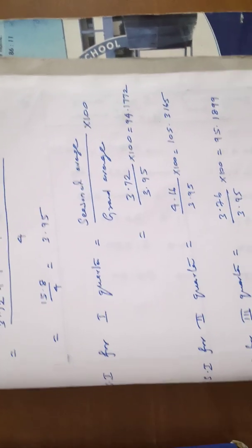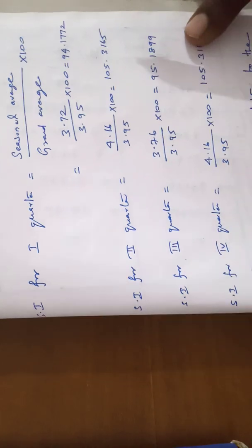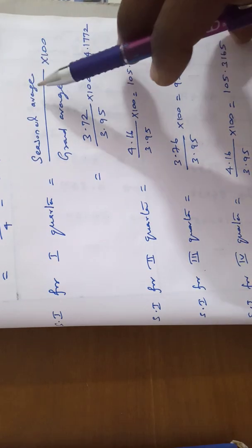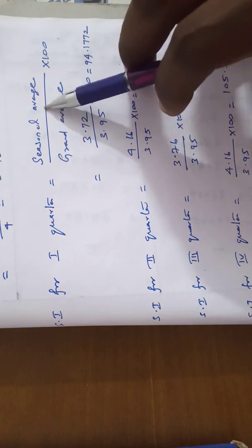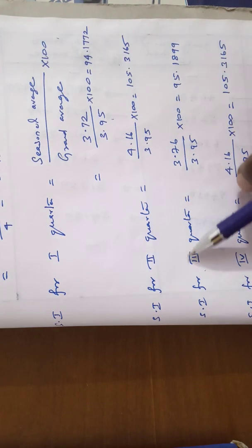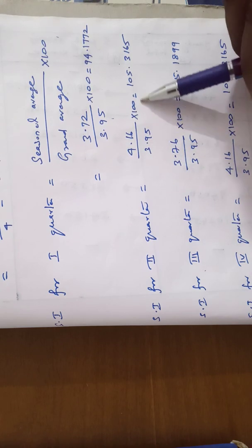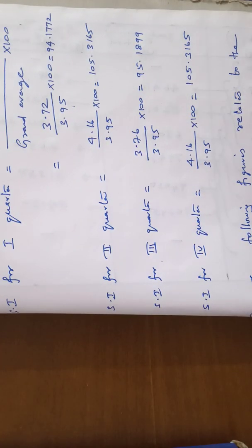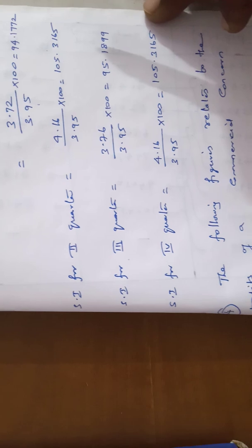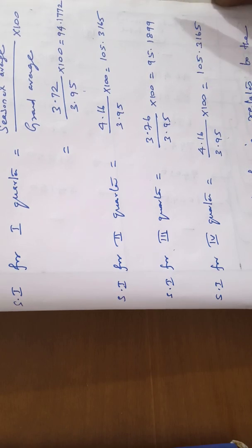We have to compute the seasonal index for each and every quarter values. First we have to compute the seasonal index for the first quarter. Seasonal average by grand average into 100. The first quarter value seasonal average is 3.72 by grand average 3.95 into 100 is 94.1772. The seasonal index for second quarter is 4.16 by grand average 3.95 into 100 is 105.3165. Third one, seasonal index for third quarter is 3.76 by 3.95 into 100 is 95.1900. Seasonal index for fourth quarter is 4.16 by 3.95 into 100 is 105.3165.